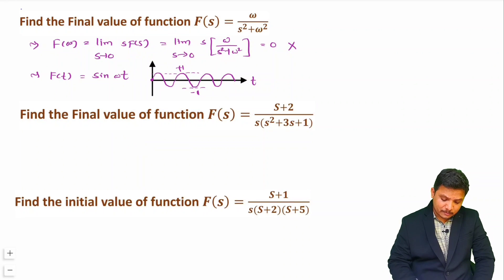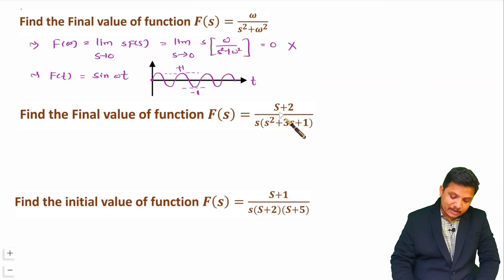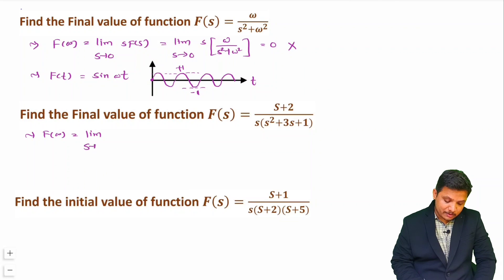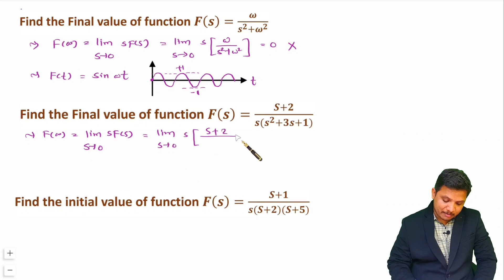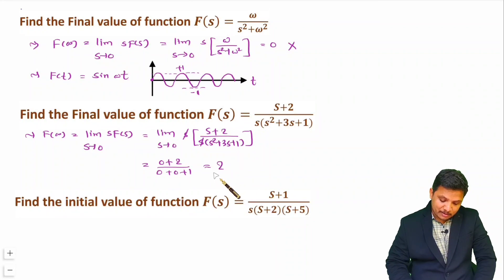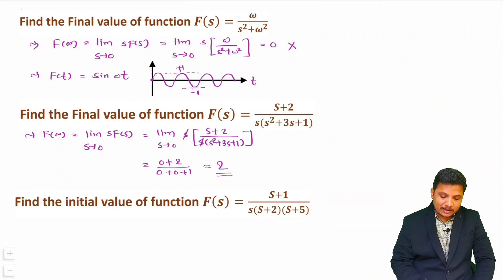For the second question, F(s) = (s + 2) / [s(s² + 3s + 1)]. The final value is limit s tends to 0 of s·F(s) = s·(s + 2)/[s(s² + 3s + 1)]. The s cancels, and substituting s = 0 gives (0 + 2)/(0 + 0 + 1) = 2/1 = 2. So the final value is 2. For this type of non-oscillatory function we can correctly apply the final value theorem.